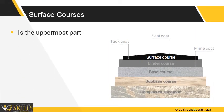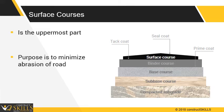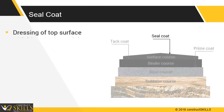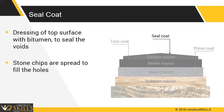Surfacing course is the topmost layer of the road in contact with traffic. Its purpose is to minimize abrasion of the road and reduce the adverse effect of climate. It should be made of superior quality materials. Seal coat is an application of a top layer with bitumen to seal the voids, followed with a cover of stone chips, making the surface watertight.